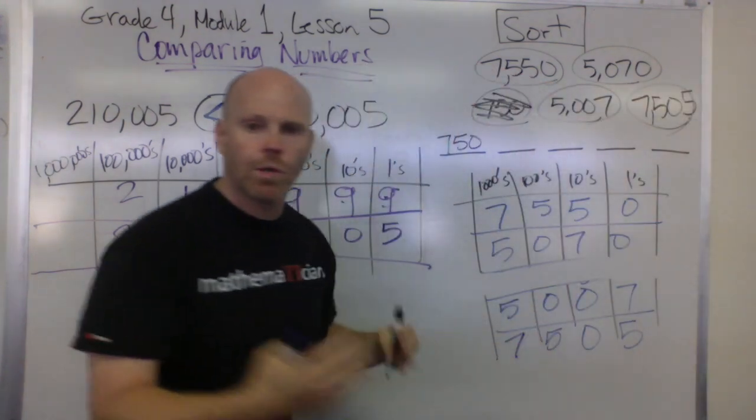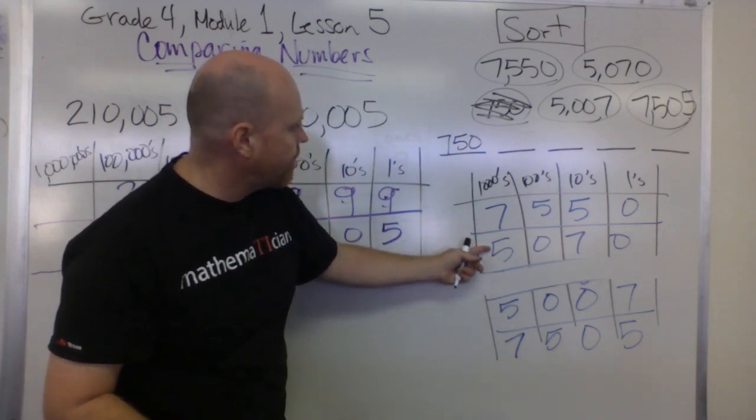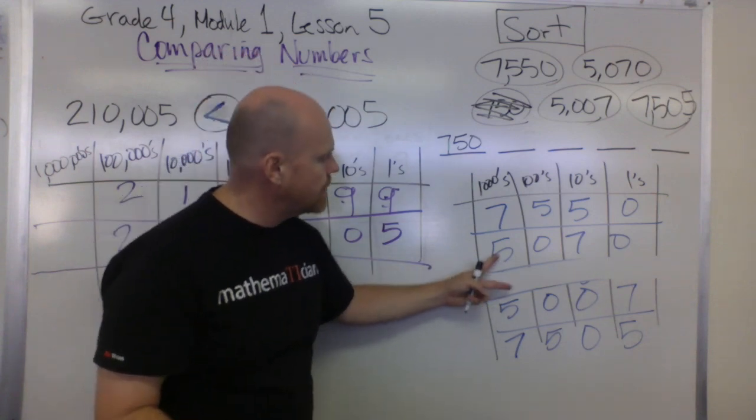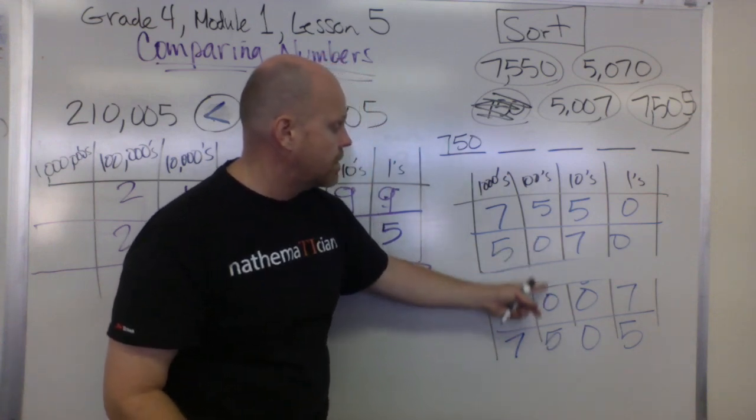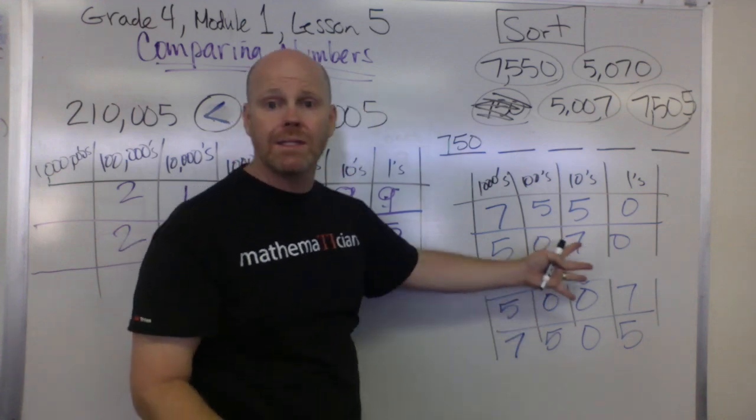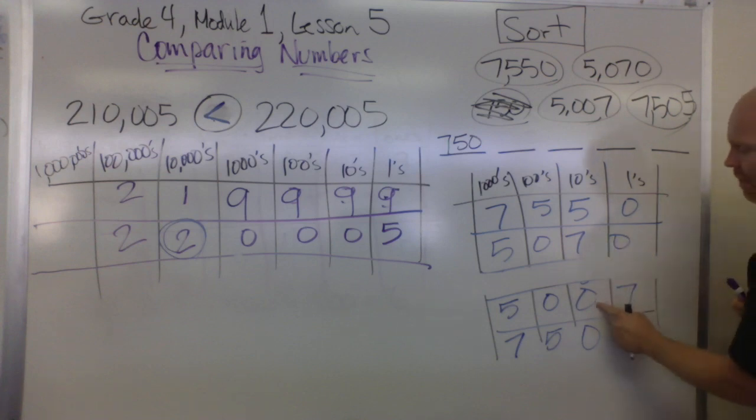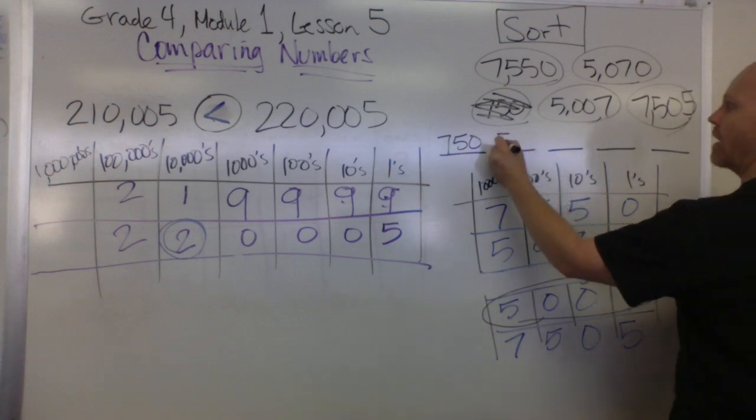Now we're still comparing and we're looking for least. We've got a tie—here we have five copies of the thousands, here we have five copies of the thousands. So what we need to do is go into the next place value down. We have zero copies of the hundreds, zero copies of the hundreds, so it's still a tie. Now we've got to go one step even further. We've got zero copies of the tens right here, we've got seven copies of the tens here. That makes this guy the least because zero loses to seven.